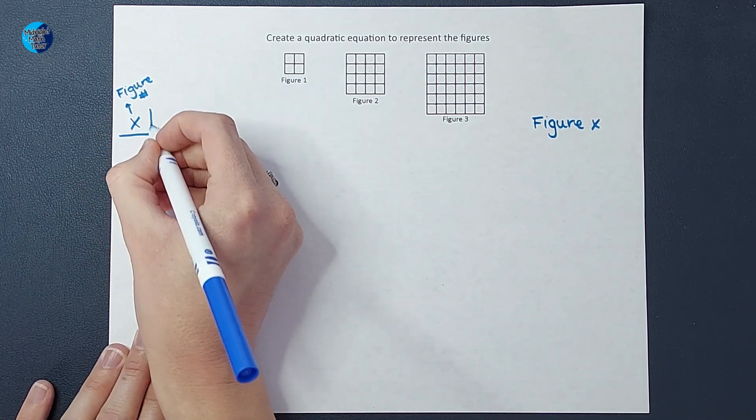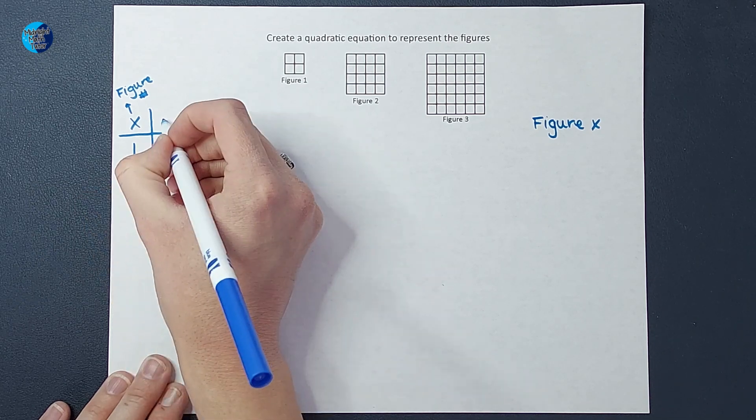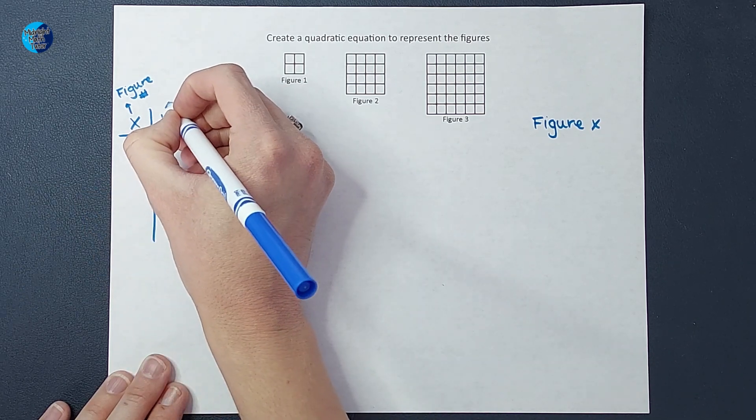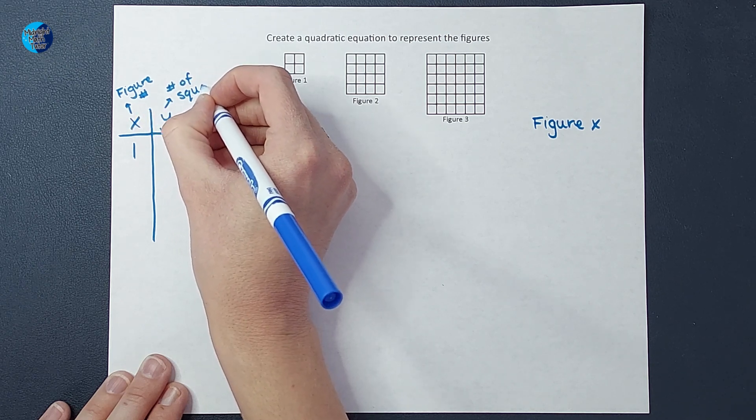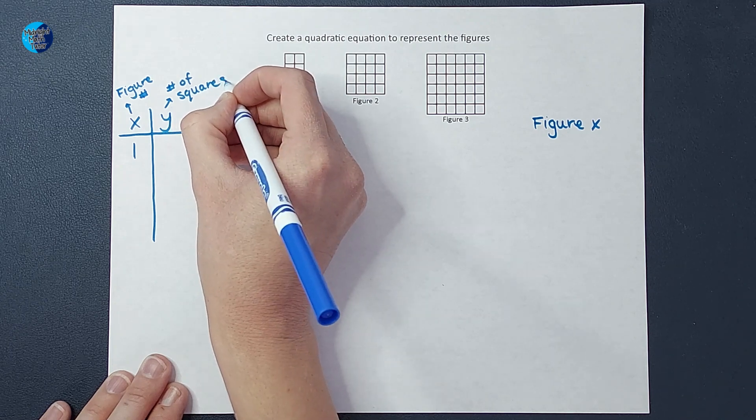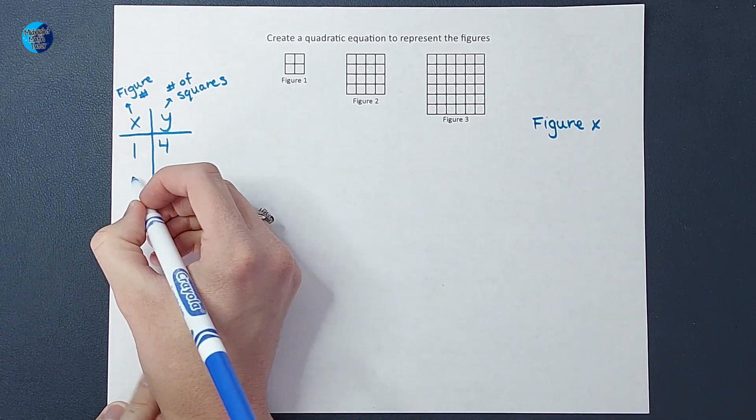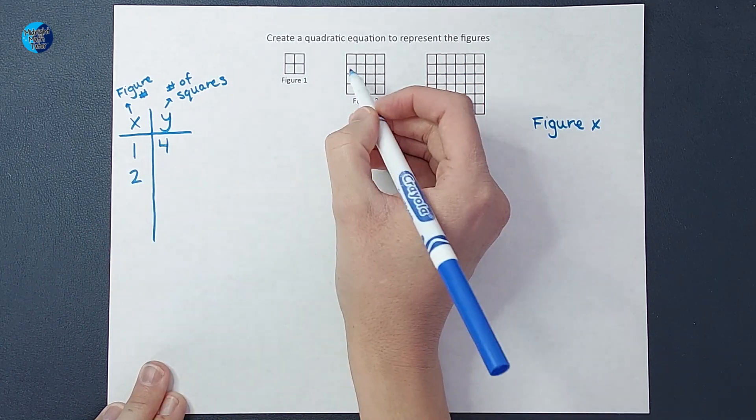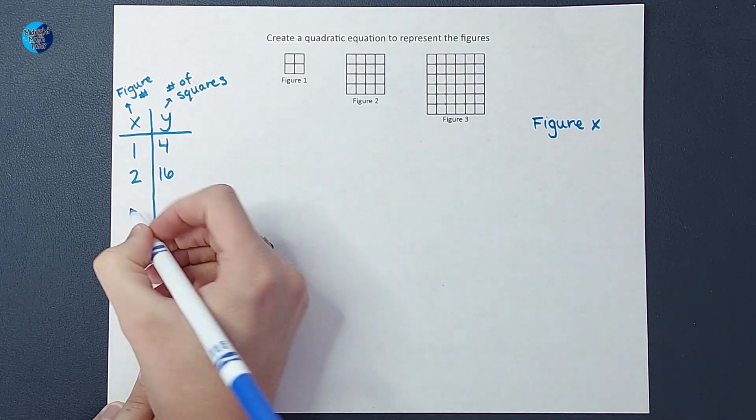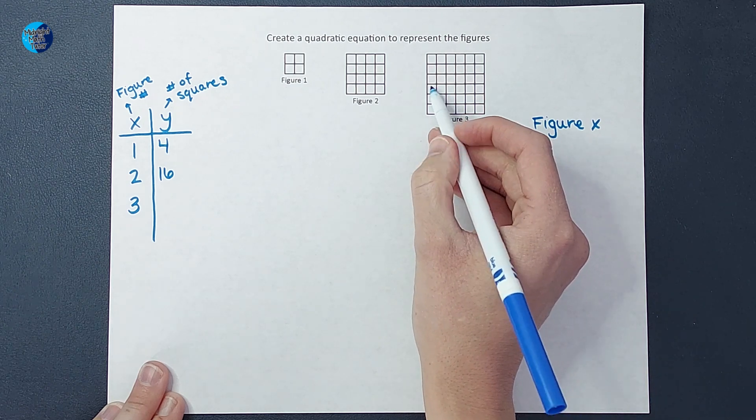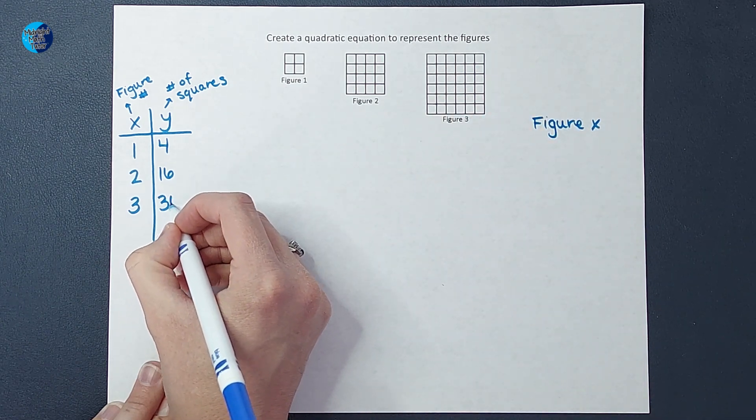So I have figure one and y is going to be the number of squares in each figure. In figure one we have 4 squares. In figure two, it's 4 by 4 so we have 16 squares. And in figure three we have 6 by 6 so it is 36 squares.